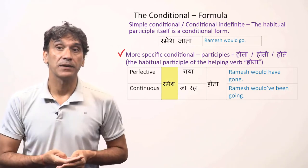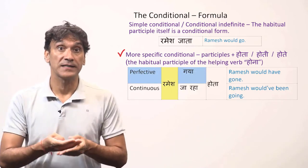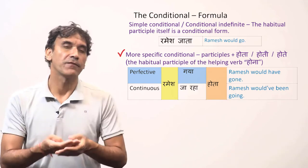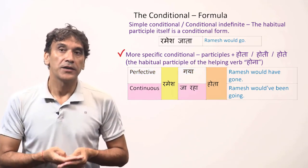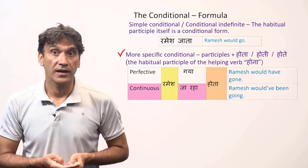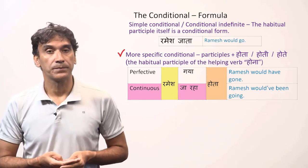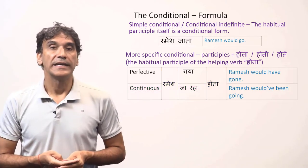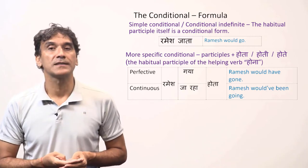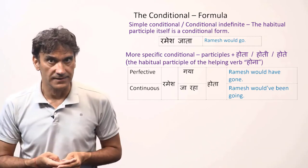Here is an example: Ramesh is the subject, the perfective participle is gaya, and you add hota — 'Ramesh gaya hota' means 'Ramesh would have gone.' With the continuous participle: 'Ramesh ja raha hota' means 'Ramesh would have been going.' Keep in mind that unless you want to be very specific, in most cases the simple conditional can replace all types of conditional sentences.